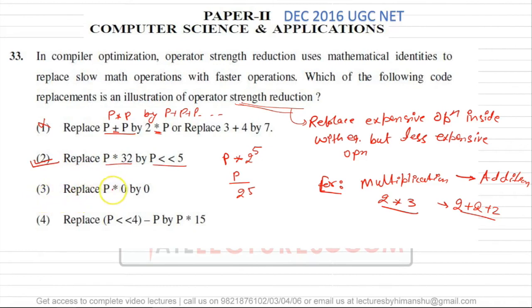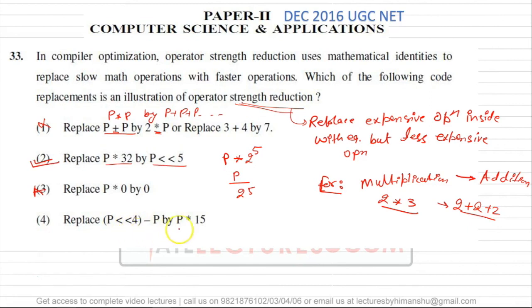The third option says p×0/0 — this doesn't make any sense and won't do anything meaningful. The fourth option says: replace p shift 4 minus p by p×15. This is wrong because shift operation is less expensive than multiplication. Here we are replacing a less expensive operation with a more expensive one, since multiplication is more expensive than shift. So this is wrong.